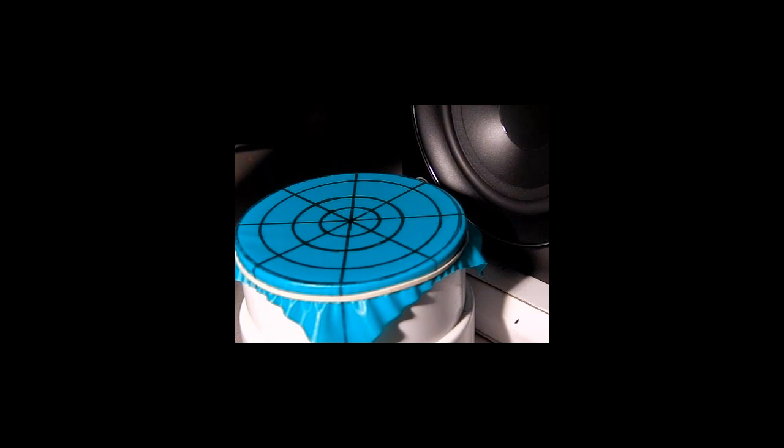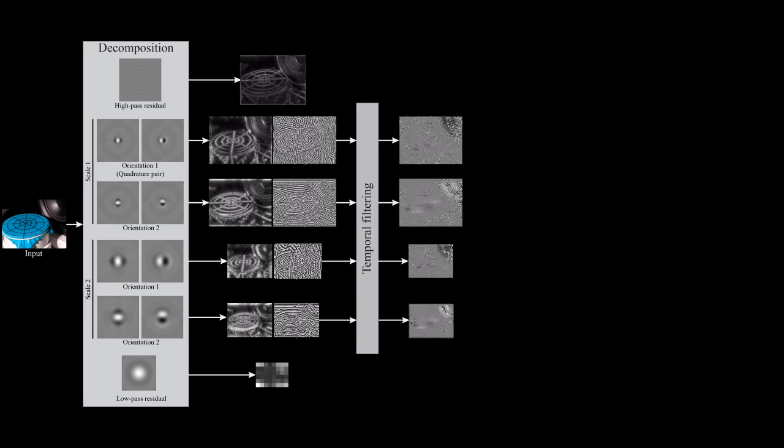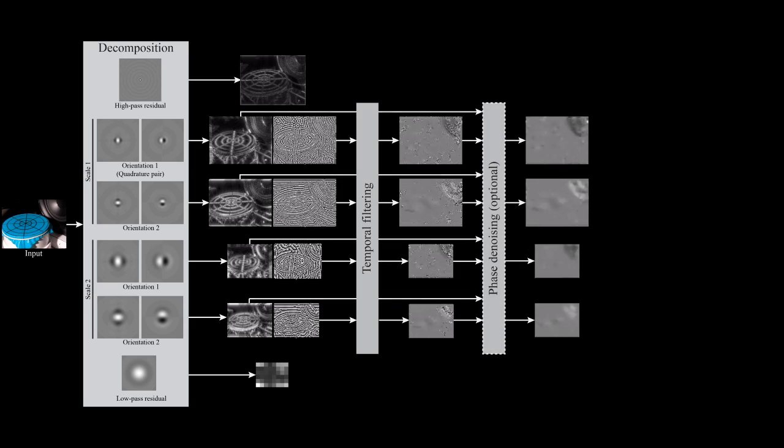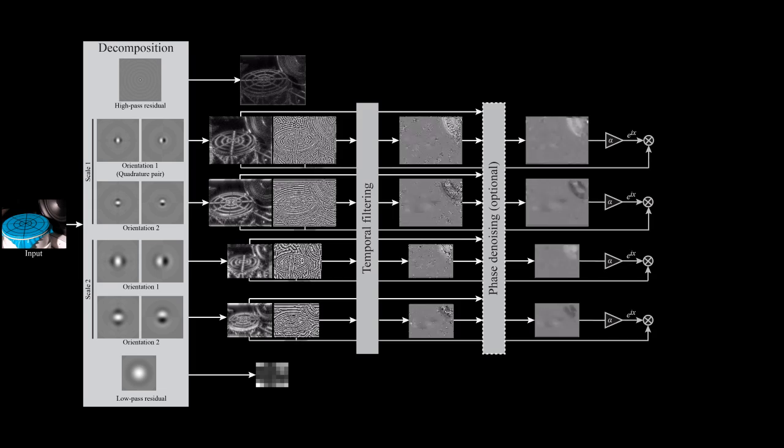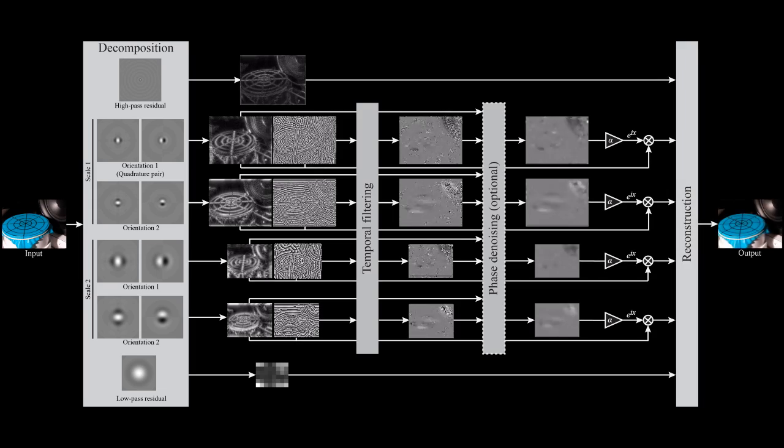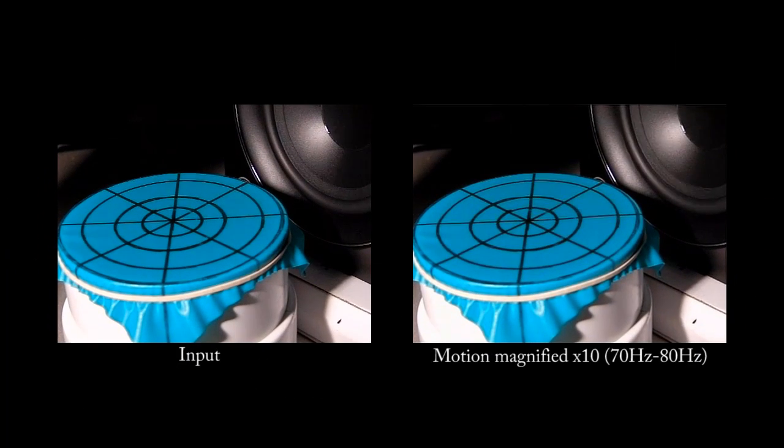For an input video, we perform the following processing. We use a complex steerable pyramid to decompose each frame and separate the amplitude and phase of each band. We then temporally filter the phases at each location, orientation, and scale. Optionally, we apply an amplitude-weighted multiscale spatial smoothing to increase the phase SNR. We amplify or attenuate the processed phases and reconstruct the video. The result is a motion-magnified sequence.